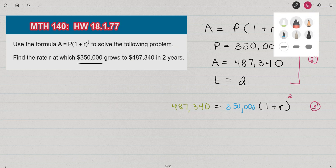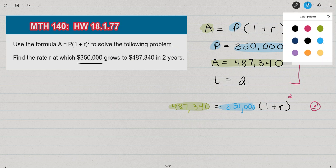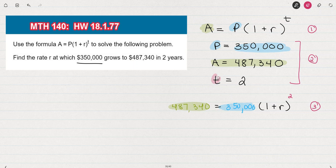Let me walk through what I just did here. So in place of A, because A equals $487,340, I put $487,340. In place of P, because P is equal to $350,000, I wrote the $350,000. And in place of T in the formula, I replaced the T with a 2.